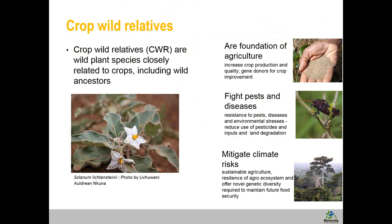Crop wild relatives also help to fight against pests and diseases by providing resistant genes, as well as resistance to environmental stresses. This helps to reduce the use of pesticide inputs, and also helps in restoring land degradation, because these crop wild relatives are much more adapted to those types of conditions. Since they are wild species, they continue to evolve with nature and changing climate, making them a source of adapted traits that can help mitigate climate change impacts and maintain future food security.